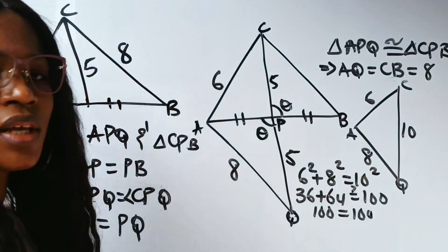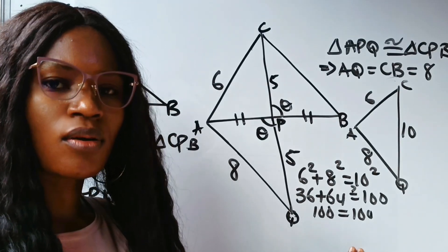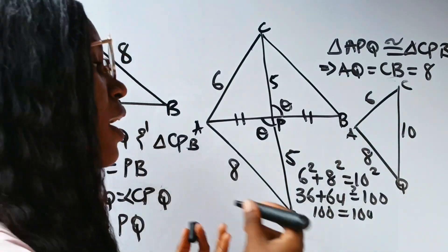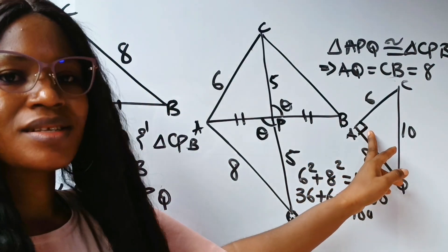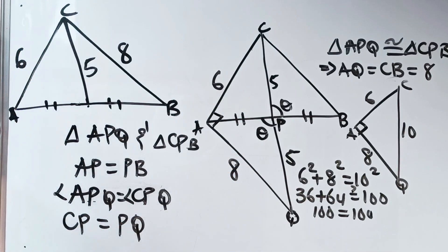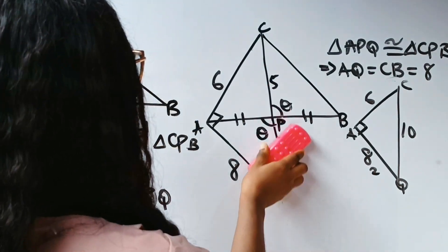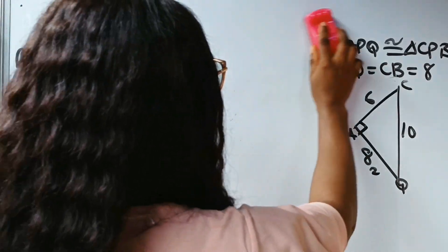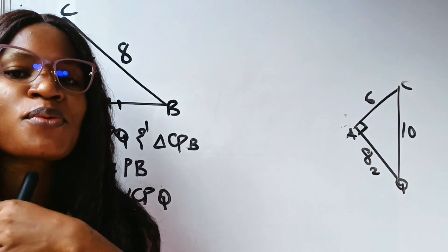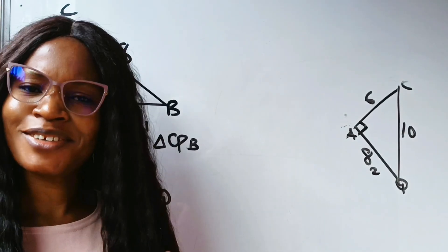And 10 squared is also 100, so 100 equals 100 — this is consistent with the Pythagorean theorem for a right-angle triangle. That means triangle CAQ is a right-angle triangle, so angle A is 90 degrees. If you're enjoying this video, please click the subscription button and turn on your notification bell.